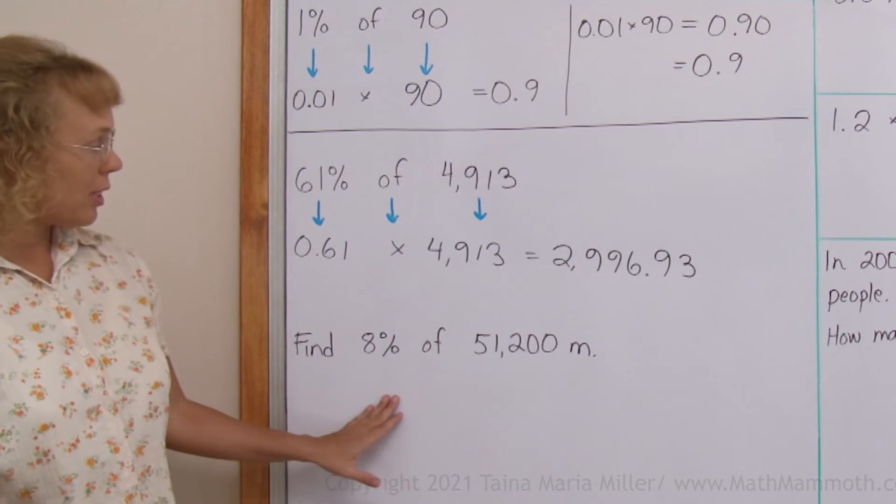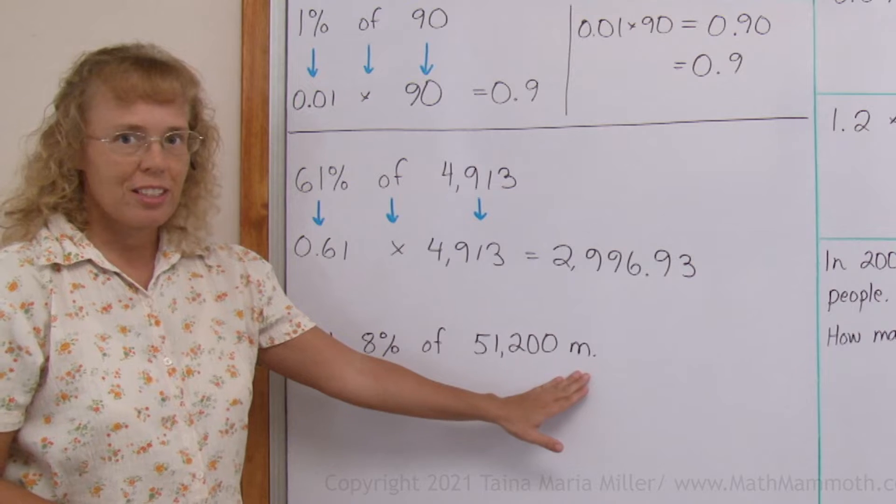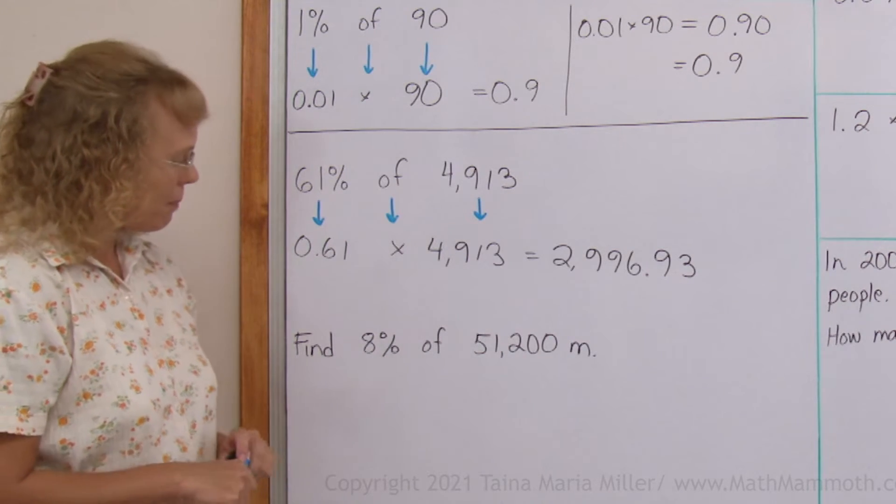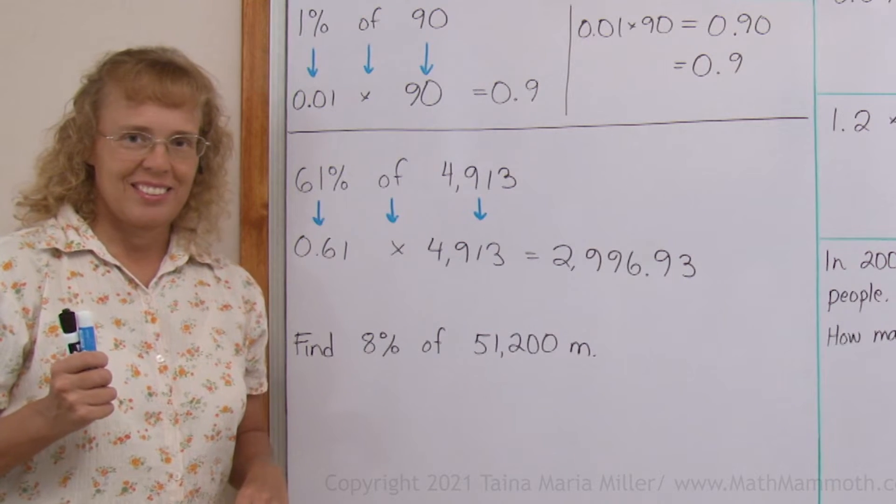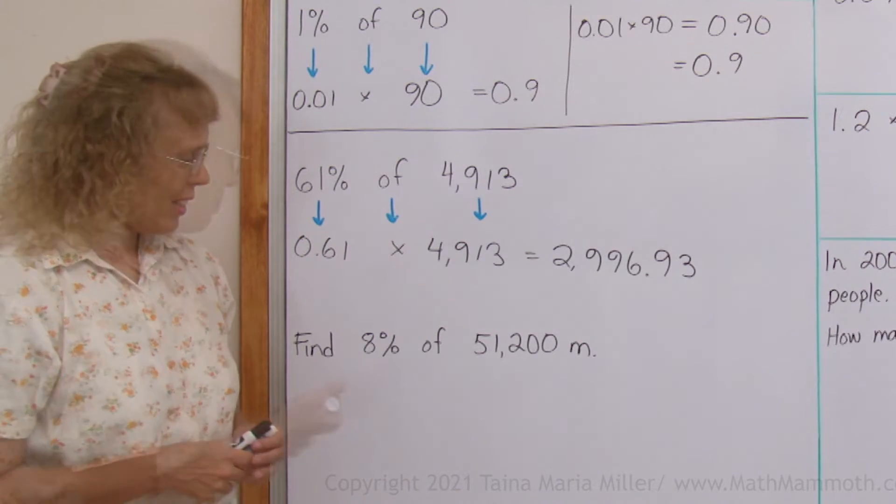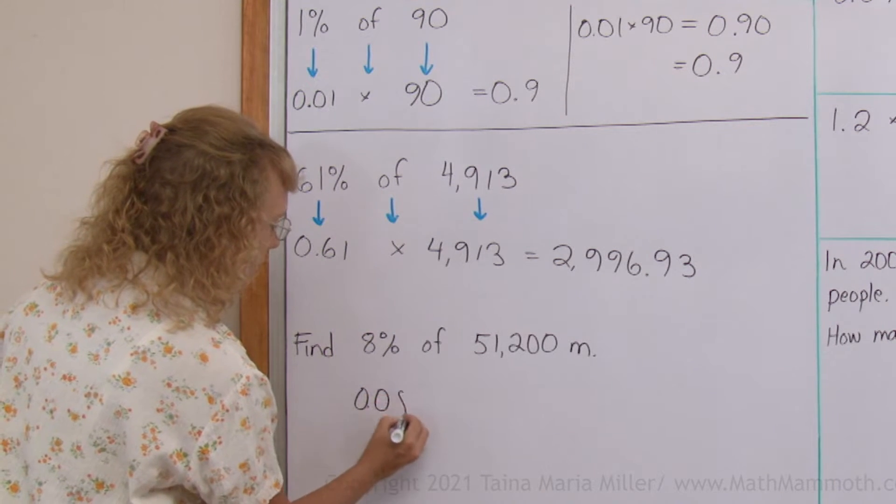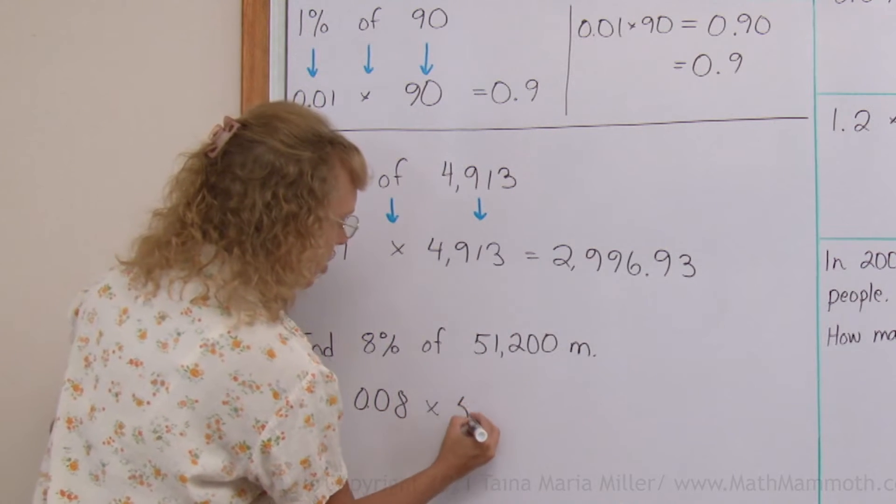Find 8% of 51,200 meters, which is of course 51 kilometers, 200 meters. Now how would you do that? You want to change this into a decimal, 0.08. This, think of it as multiplication. This does not change.